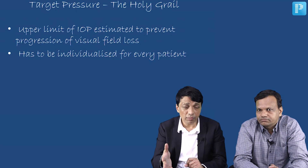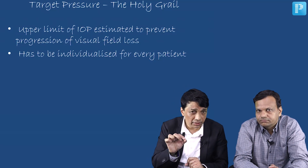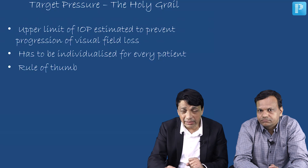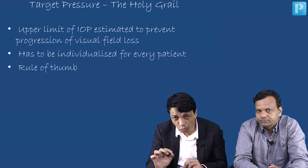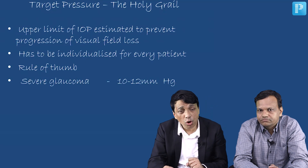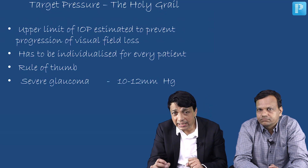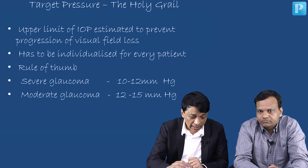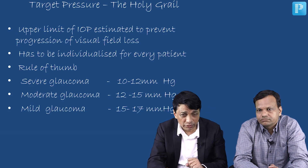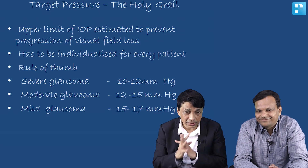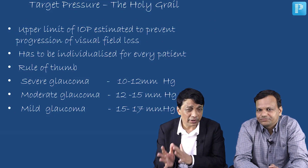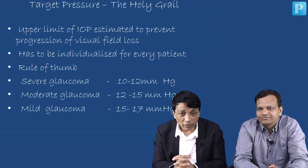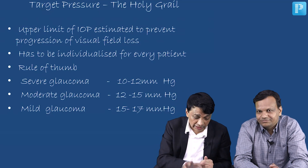Whenever a glaucoma patient comes to us, we tell them what the intraocular pressure is and set our target. The target pressure has multiple factors, but as a rule of thumb: for severe glaucoma, we aim for less than 10 to 12 millimeters of mercury; for moderate glaucoma, it is about 12 to 15; and for mild glaucoma, it is around 15 to 17. Just remember the mid-teens — we do not want pressure to go above 21, but mid-teens is a good aim.